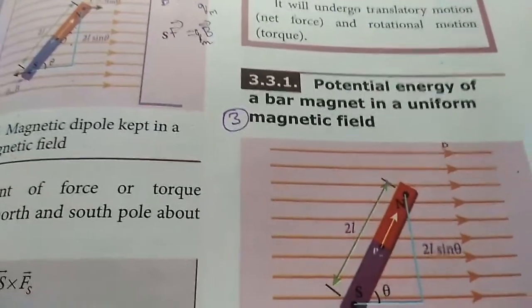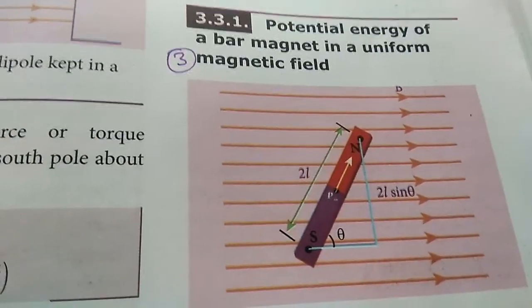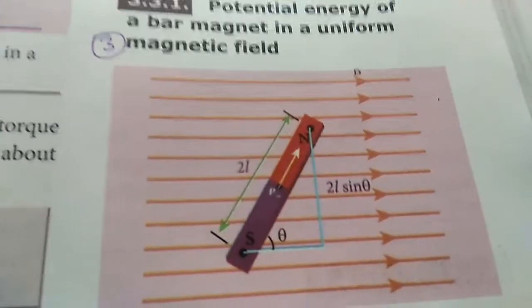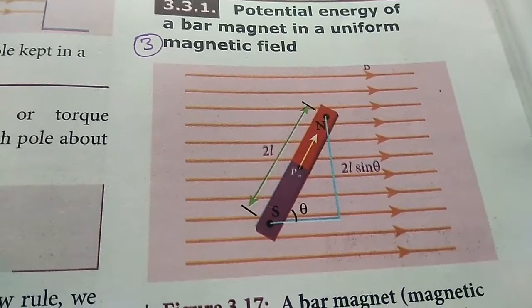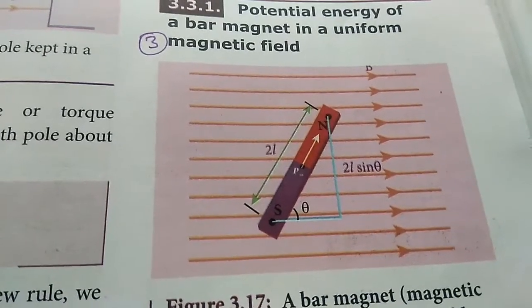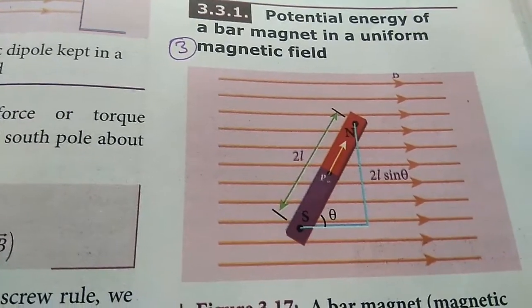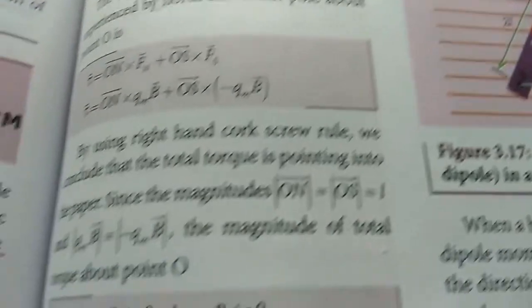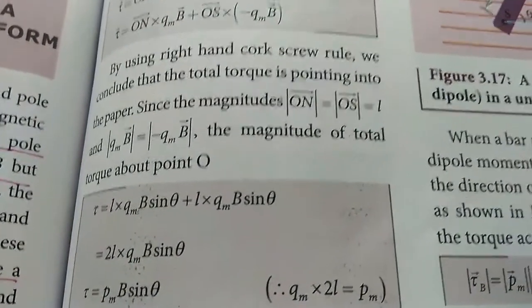Students, our next heading is potential energy of a bar magnet in a uniform magnetic field. Here we have a bar magnet of length 2L and pole strength Qm kept in a uniform magnetic field. At an inclination angle theta in this magnetic field, it experiences a torque tau equal to PmB sin theta.